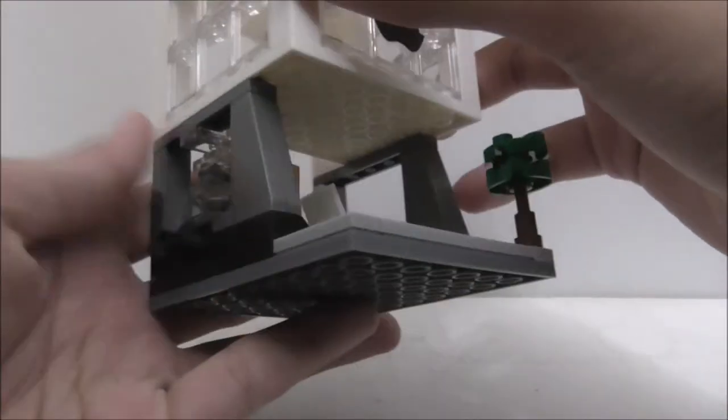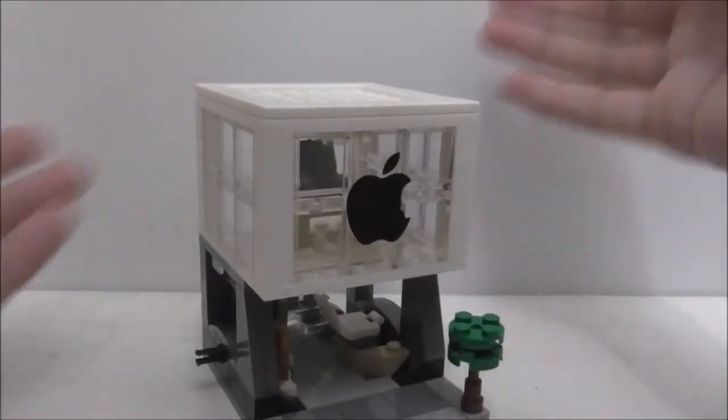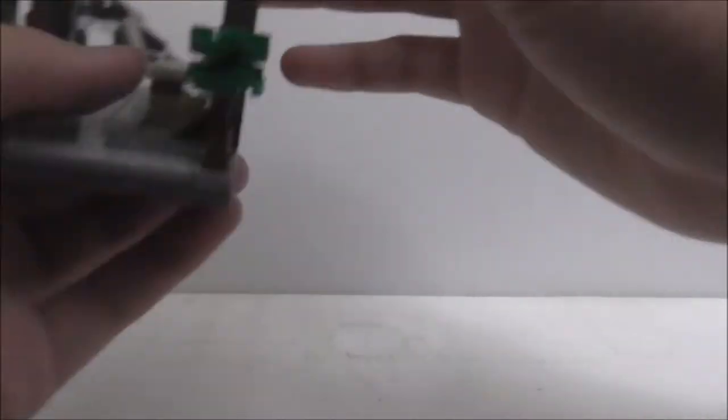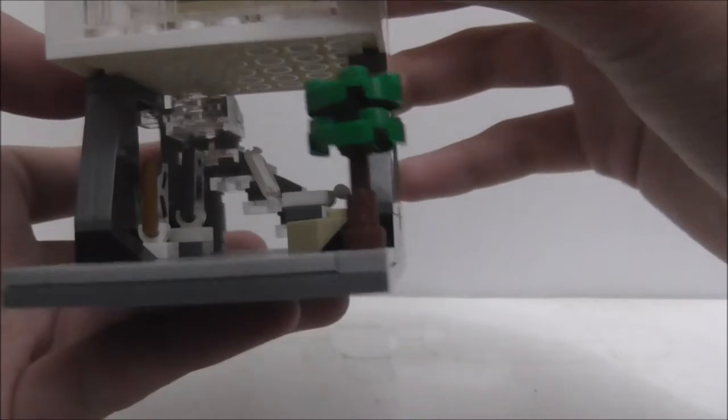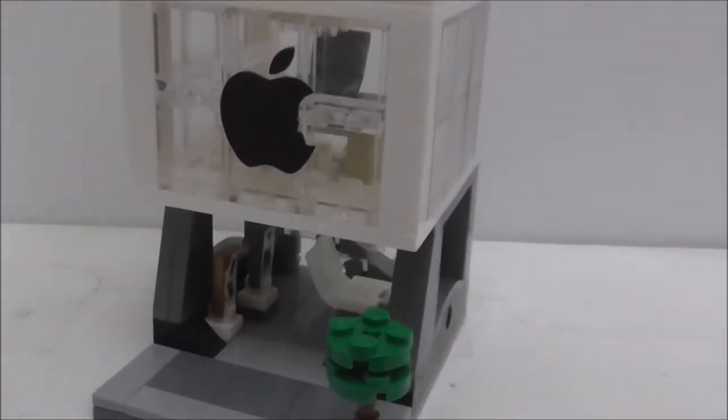On the side here I got this Technic connector to connect it to other buildings so you can make a whole city, and also another Technic piece to allow a Technic connector to be inserted. It's just a street build which here you got this small little greed. Inside of the Apple store you got a phone display which is pretty interesting.